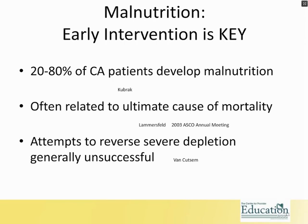When referring to malnutrition in the cancer patient population, this is news to many clinicians: malnutrition is important, it occurs, and there are interventions that can protect patients. The key message is that early intervention is critical — patients develop malnutrition, and attempts to reverse severe depletion are generally unsuccessful. It's a slippery slope. Our goal is not to fix it — we cannot regain weight or protein status during treatment. All we can do is halt it. The goal is to get there early and prevent that slide downhill toward malnutrition.